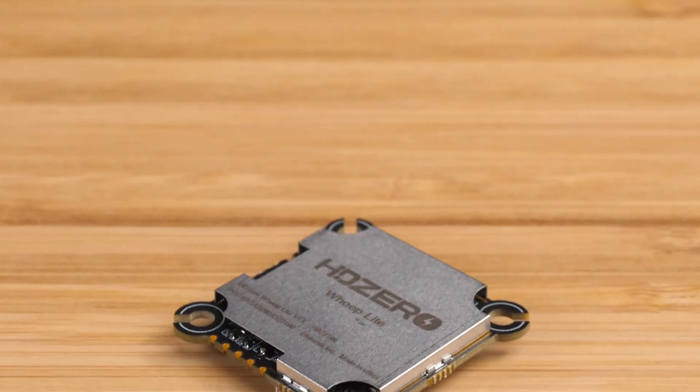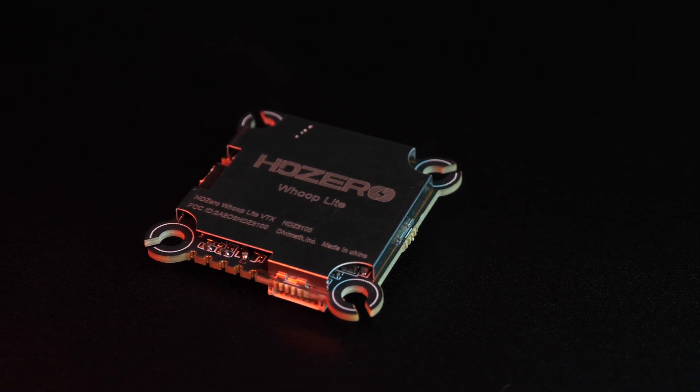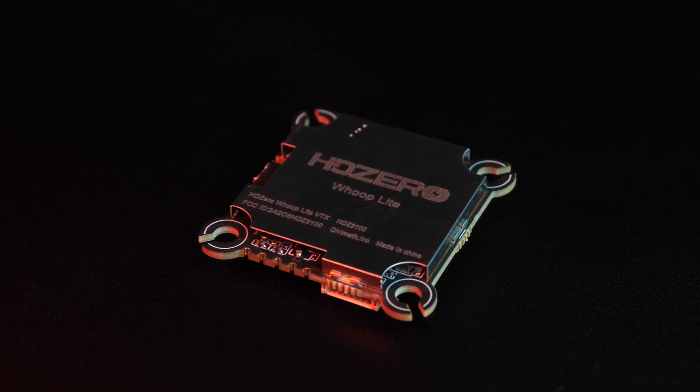But first let's talk about this metal shield. It really gives this VTX a striking appearance and it's not something that we've seen on any other HD0 VTX before. The shield is really just intended for physical protection so it's not made to reduce RF interference and it doesn't act as a heat sink or anything like that.